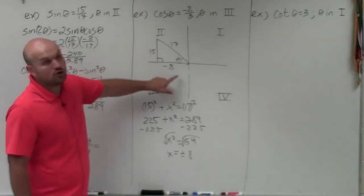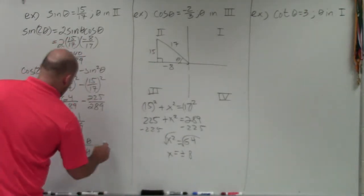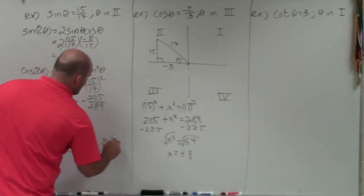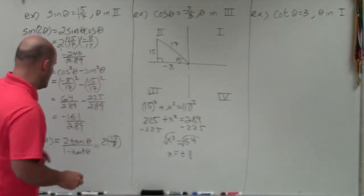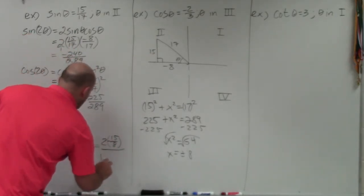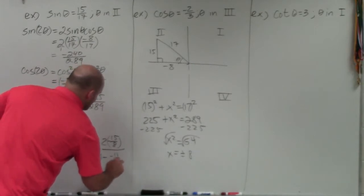So tangent, remember now, is opposite over adjacent, right? So I have 2 times a negative 15 over 8. I use negative 8 in all these, right? OK. Yeah, good. Good. Divided by 1 minus negative 15 over 8 squared.